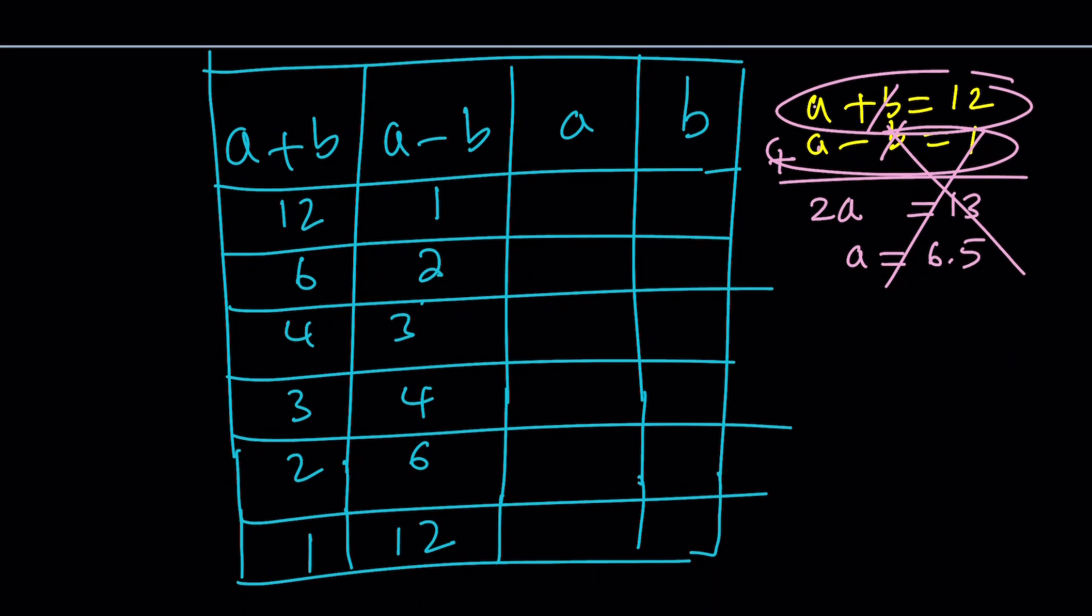For example, and we can kind of put a checkmark here too. For the good cases, checkmark means yes, we have a solution. X means we don't have an integer solution. Let's go ahead and put those marks. 12 and 1. One of them is even. The other one is odd. So we're not going to get a solution. 6 and 2 will probably work. So we have a check.